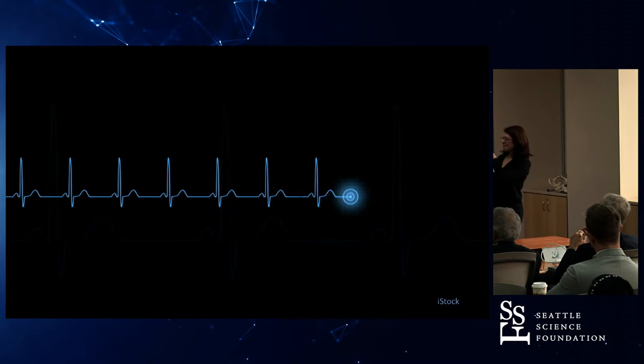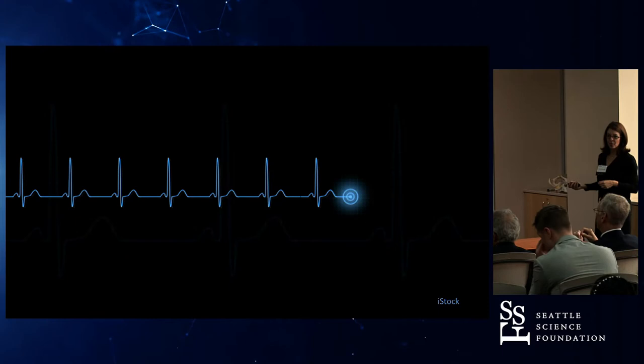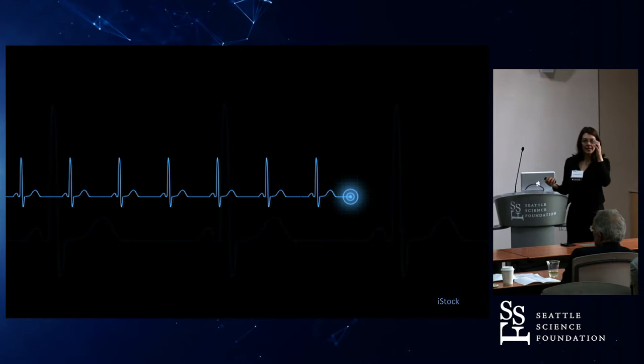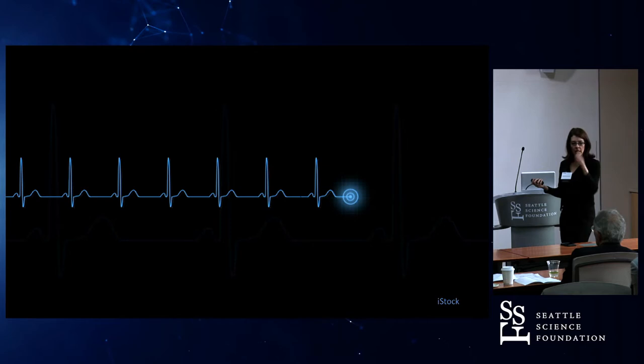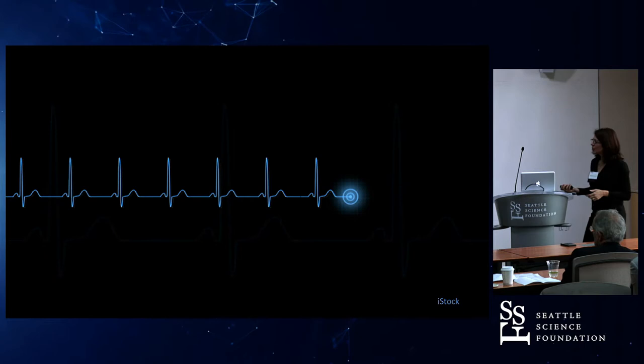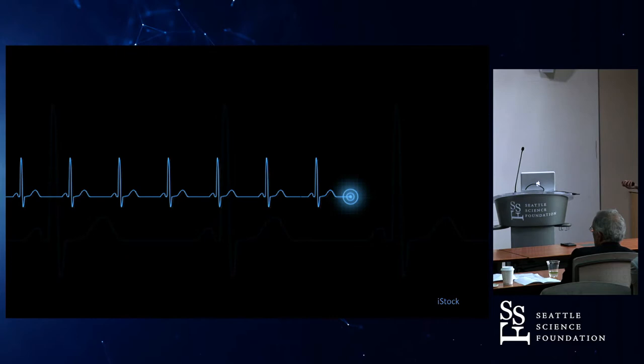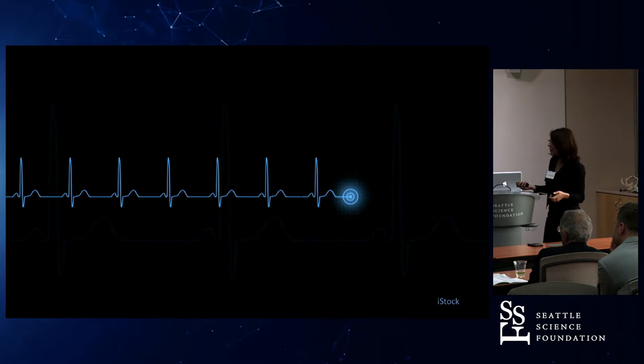Good question. So here is an ECG from iStock. A non-gated study is going to image just whenever the scanner goes on, and it's going to image at one point in time. What gating does — and we do it differently for different things we're trying to image — for an aorta, we're going to image during diastole, because there's the least amount of motion. I want to image here, not there.